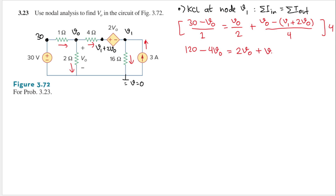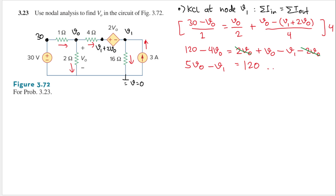Then plus V0, and 4 cancels so I have V0 minus — distributing the minus sign — V1 minus 2V0. The 2V0 terms cancel each other. So I get 5V0 minus V1 equals 120. Let's save this as equation number one.